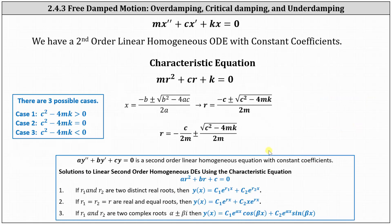Once again, we should recognize this as a second order linear homogeneous ODE with constant coefficients, which we can solve using a characteristic equation. Notice the corresponding characteristic equation is mr squared plus cr plus k equals zero.